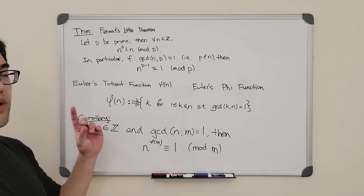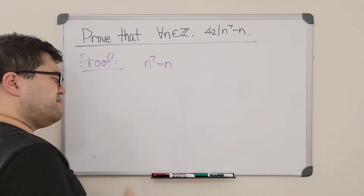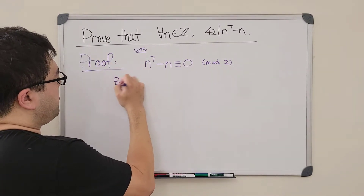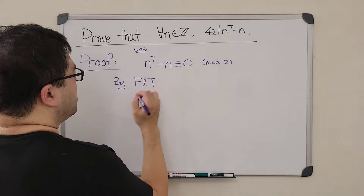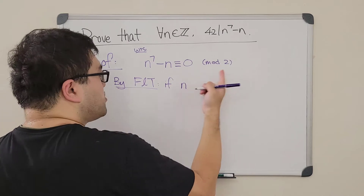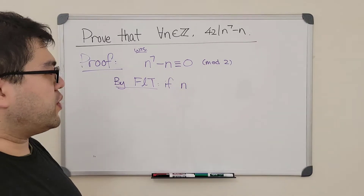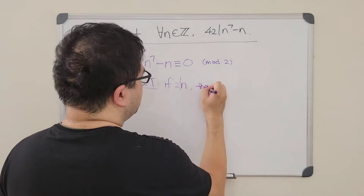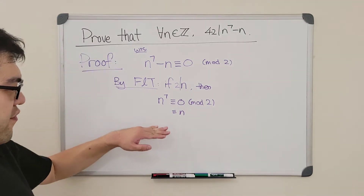Let's get into the actual proof. First we want to show that n to the 7th power minus n is congruent to zero mod 2. By Fermat's Little Theorem — I use lowercase l on purpose to avoid confusion with the Last Theorem — if n is a multiple of two, meaning the gcd of n and 2 equals 2 (since 2 is prime that's the only way it's not 1), then n to the seventh power is also congruent to zero mod 2, which equals n, so we've finished that half.